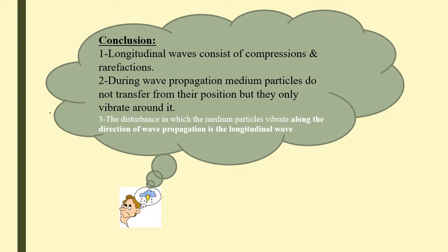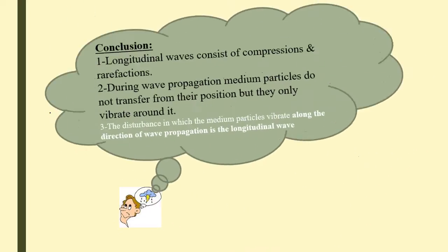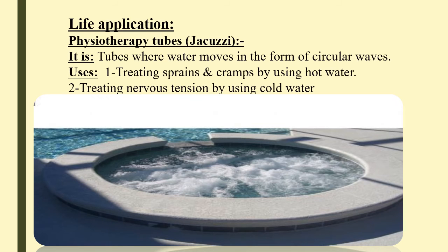A longitudinal wave consists of compressions and rarefactions. During wave propagation, medium particles don't transfer from their position but only vibrate around their original point. The disturbance in which medium particles vibrate along the direction of wave propagation is called a longitudinal wave. An application of wave motion is the Jacuzzi — a tube where water moves in circular waves, used to treat sprains and cramps with hot water and nervous tension with cold water.